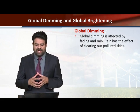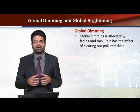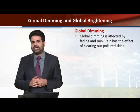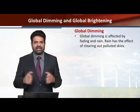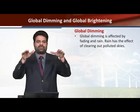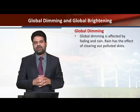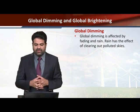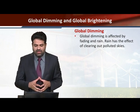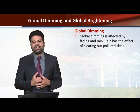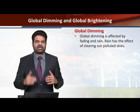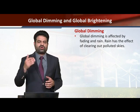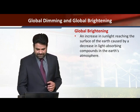Global Dimming is affected by fading and rain. When rain occurs, direct sunlight does not fall on the earth. In a fading-like situation, pollution or some kind of cloud blocks the sunlight. Rain has the effect of clearing out polluted skies — when it rains, polluted skies clear and dimming is reduced.